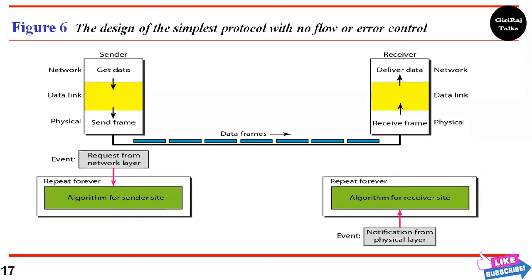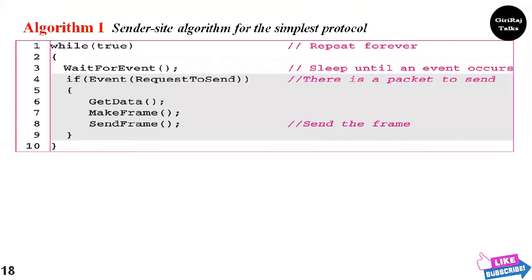The sender side cannot send a frame until its network layer has a data packet to send. The receiver side cannot deliver a data packet to its network layer until a frame arrives. If the protocol is implemented as a procedure, we need to introduce the data of events in the protocol. The procedure at the sender side is constantly running with no action until there is a request from the network layer. The procedure at the receiver side is also constantly running but there is no action until a notification from the physical layer arrives.